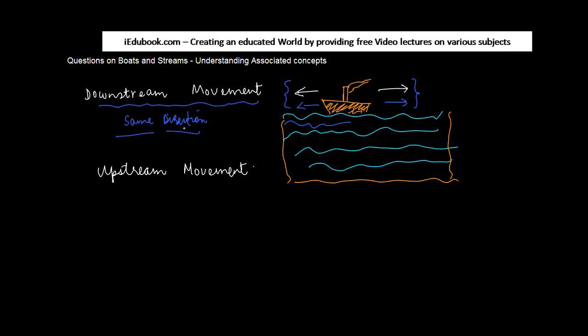On the contrary, if the direction of the river is like this vis-a-vis the direction of the boat, or the river is moving like this and the boat is moving like this, then it is known as upstream movement - opposite direction.